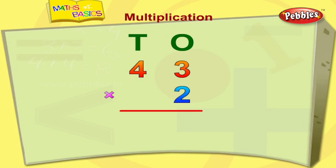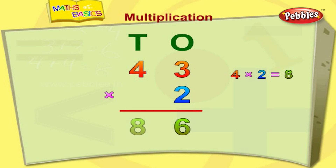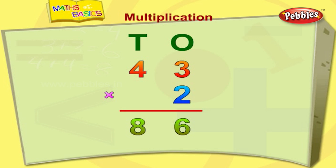We have learnt the tables. We shall now see how to multiply bigger numbers. We should always multiply the ones column first. Three twos are six. Now multiply the tens column — four twos are eight. Forty-three multiplied by two is equal to eighty-six.